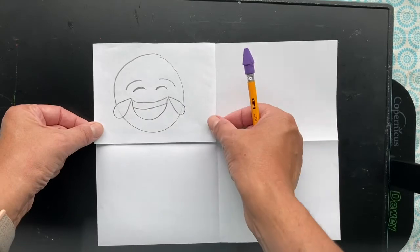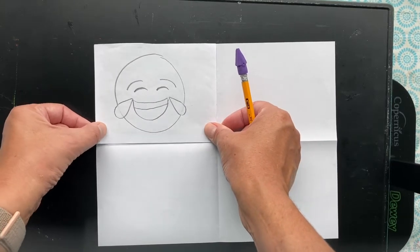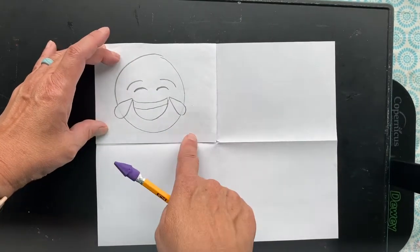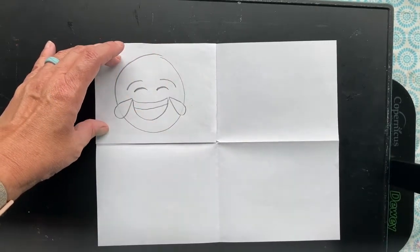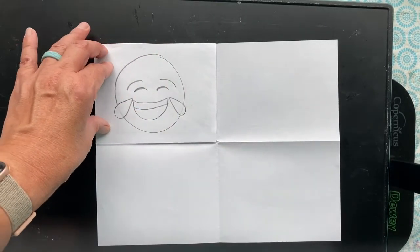So you just want to line up your square, or rectangle I should say, in each rectangle up here and you want to trace over him. I'm going to go ahead and do that in high speed.